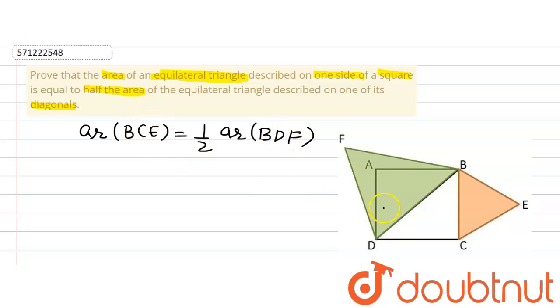Now if we observe triangle BCE and triangle BDF, both are equilateral triangles. That means that all three angles of both the triangles is equal to 60 degrees.